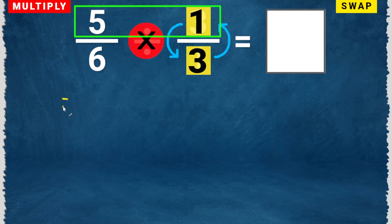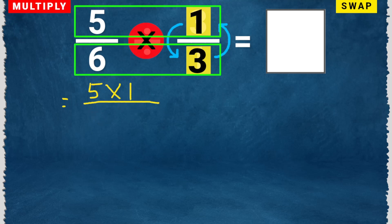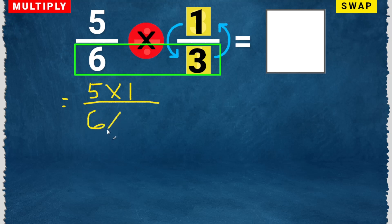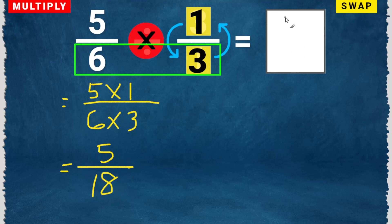Multiply the numerators: 5 times 1. Multiply the denominators: 6 times 3. 5 times 1 is 5, and 6 times 3 is 18. The answer is 5 over 18.